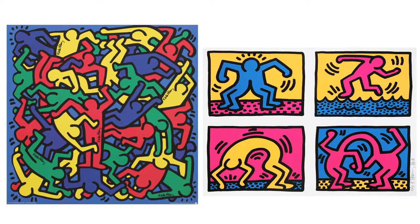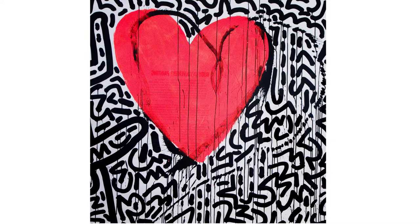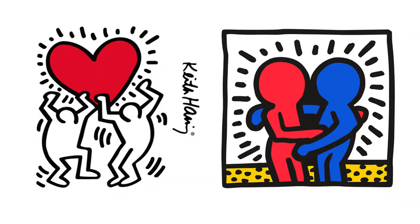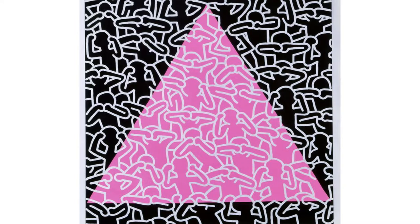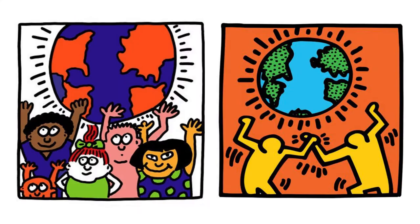In 1988, Haring became very sick with a disease called AIDS. He kept on drawing and made posters to raise awareness about the disease. Before he died, he set up the Keith Haring Foundation to fund AIDS research and help kids who are in need.